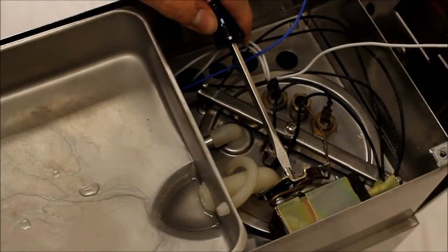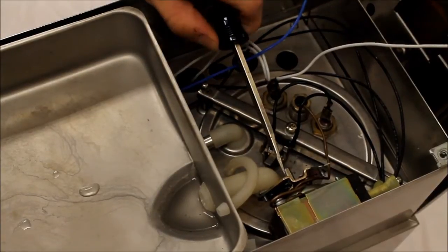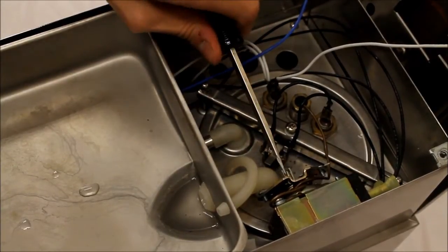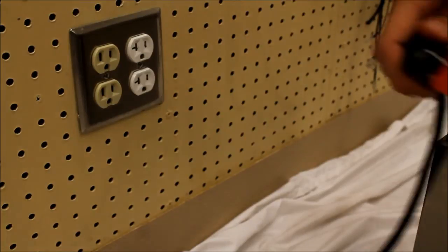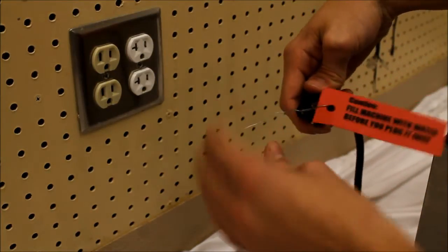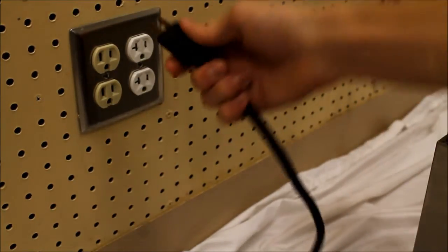Turn the thermostat clockwise toward the front of the machine with a flathead screwdriver. Once you've done that, you can replace the top and remove the warning label from the cord to plug the machine in.